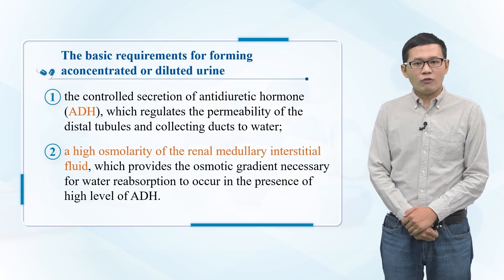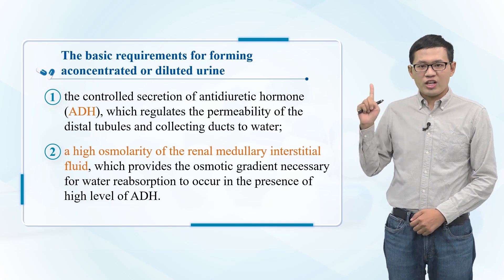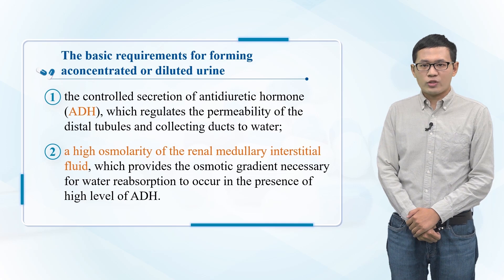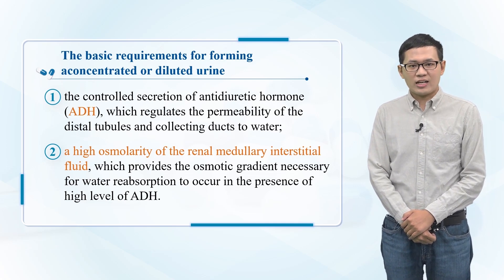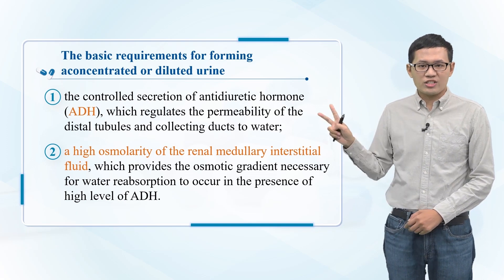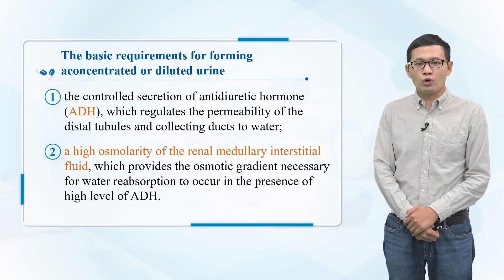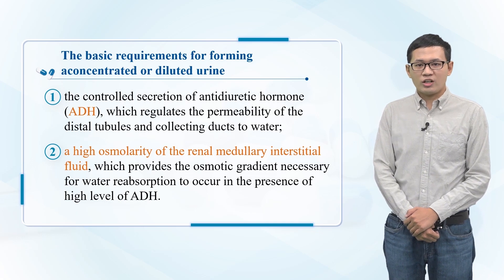There are two basic requirements for forming a concentrated or diluted urine. The first is the controlled secretion of ADH, which regulates the permeability of distal tubulars and collecting ducts to water. The other is a high osmolality of renal medullary interstitial fluid, which provides the osmotic gradient necessary for water resorption to occur in the presence of high-level ADH.